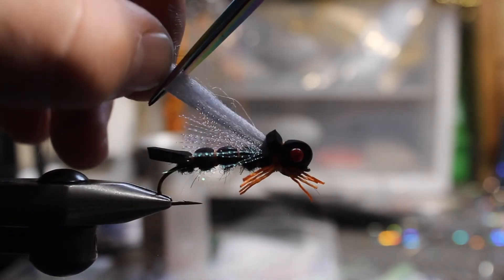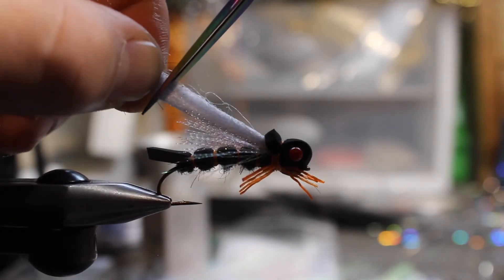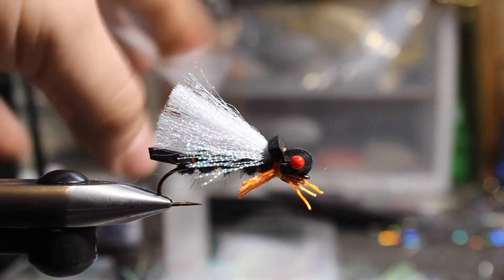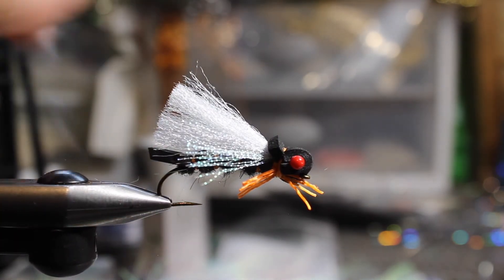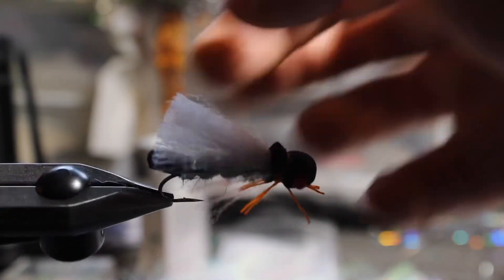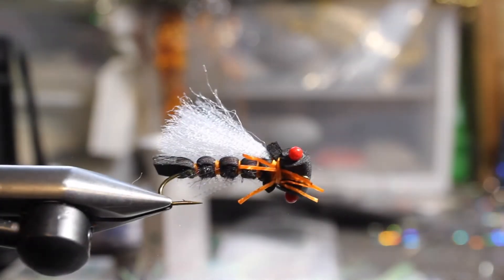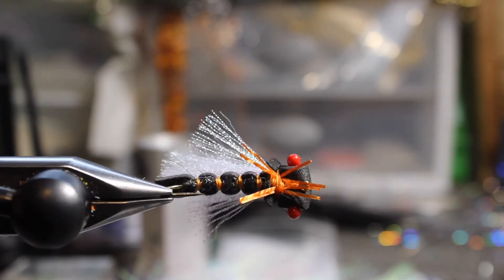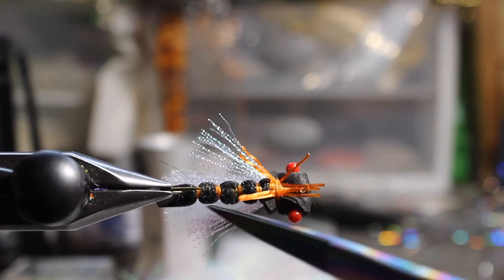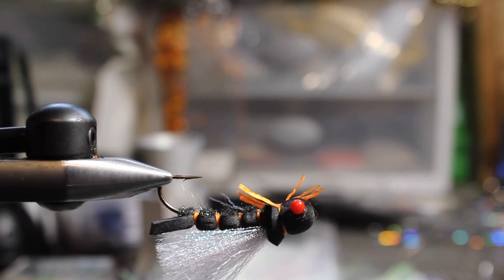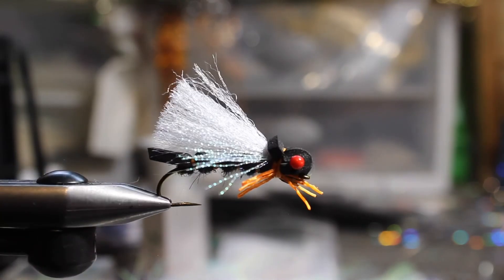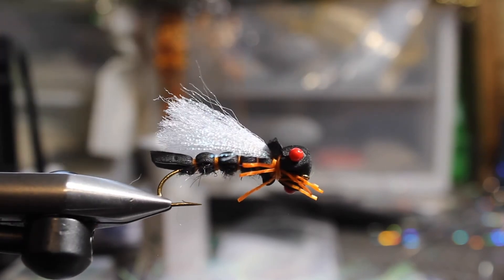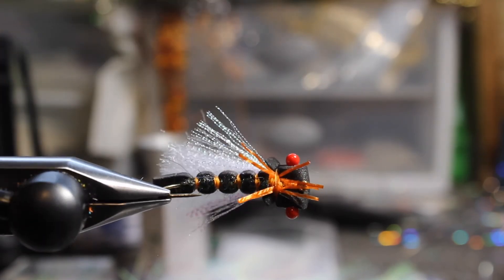Now take all the poly wing back, 45 degree angle from the tail. Boom, snip it off. There it is. Basic foam cicada. You can see I have nice clean segments the whole way. Durable fly. It's going to float nice and high. That's it, basic foam cicada.